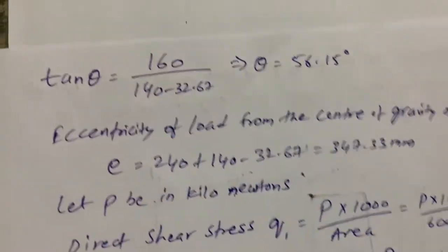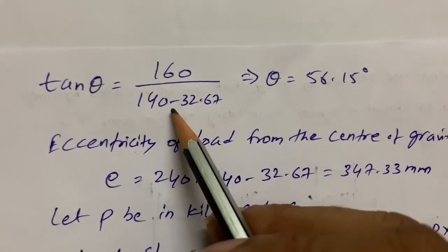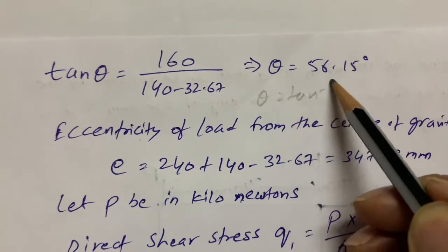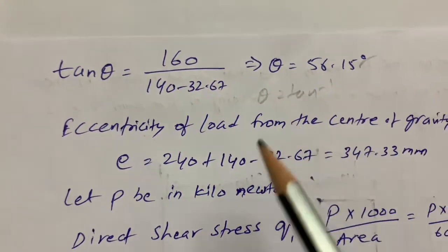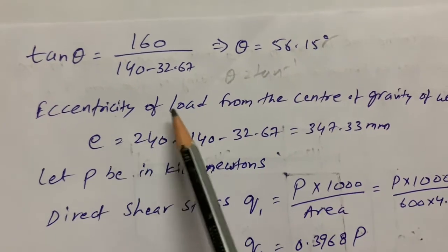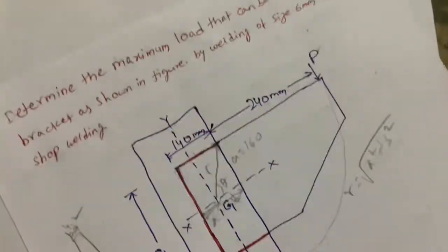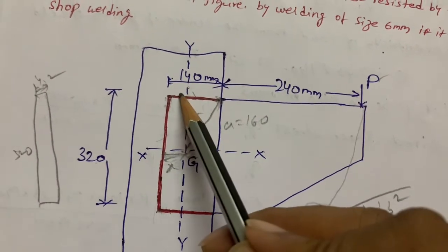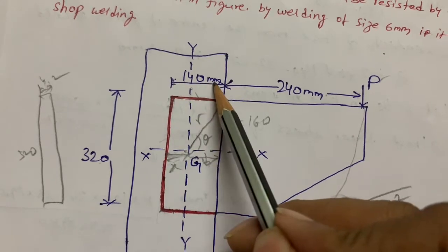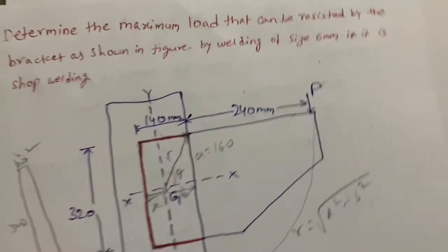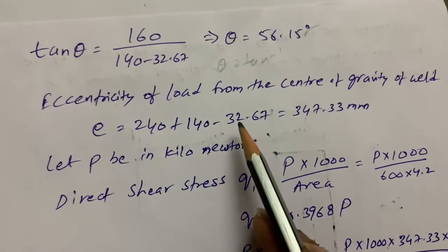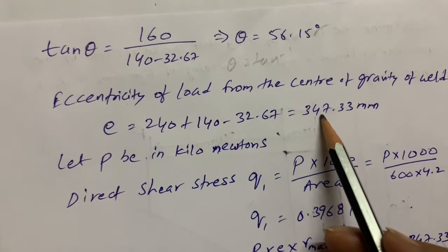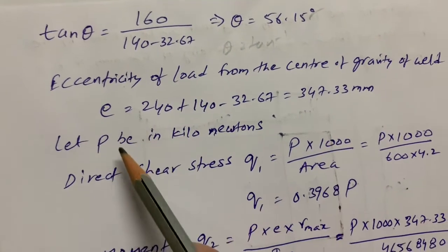Next we calculate tan θ = opposite side / adjacent side using the diagram values, giving θ = tan⁻¹(107.33/160). For eccentricity e, this is the distance from the centroid to the load point. Here e = 240 + 140 − 32.67, giving us the eccentricity value.